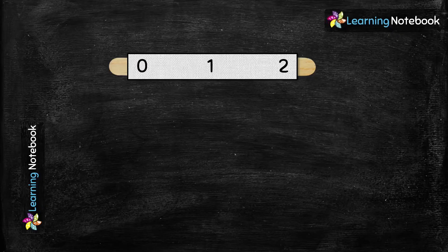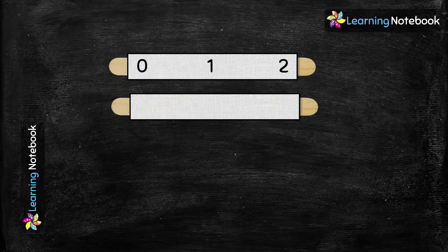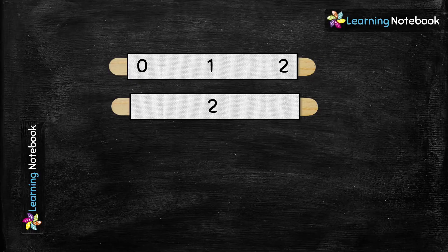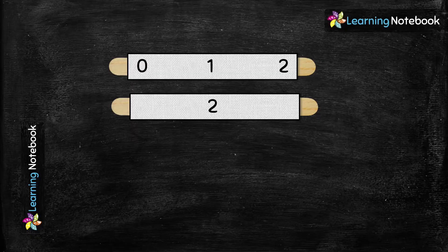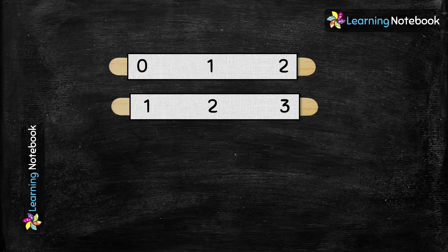Similarly, let's take the second ice cream stick and one more white strip. Now we will write 2 in the middle of this strip. Now what comes before 2? 1. And what comes after 2? Yes, 3. And 2 is in between 1 and 3.